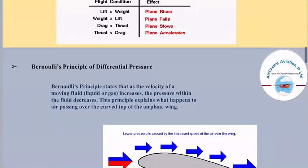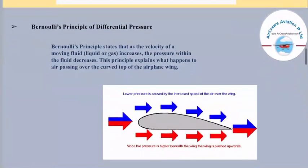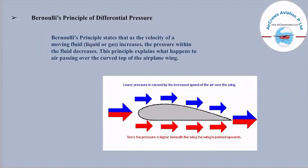We also have the principle of differential pressure — Bernoulli's principle. Bernoulli's principle states that as the velocity of a moving fluid, which is a liquid or gas, increases, the pressure within the fluid decreases. This principle explains what happens to air passing over the curved top of the airplane wing. Here we have an airfoil section. The blue arrows show the lower pressure caused by the increased speed of air over the wing. The red arrows show that since pressure is higher beneath the wing, the wing is pushed upward. The pressure above the wing is low and below is high — that is why the wing is pushed upward.